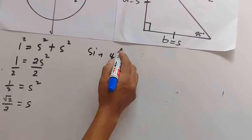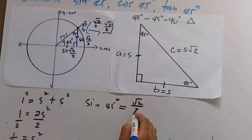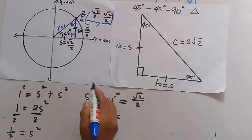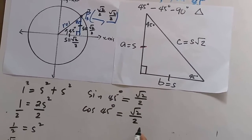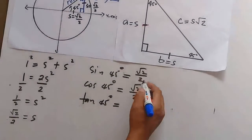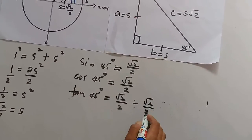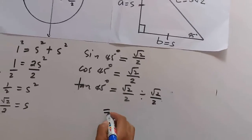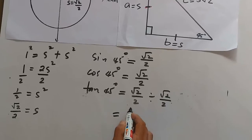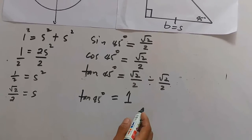Therefore, sine 45 degrees is equal to the ordinate, square root of 2 over 2. Cosine 45 degrees is equal to the abscissa, square root of 2 over 2. And tangent 45 degrees is the ratio of these two: square root of 2 over 2 divided by square root of 2 over 2. Any number divided by itself is always 1, and that is the value of tangent 45 degrees.